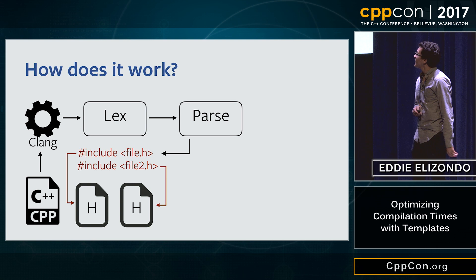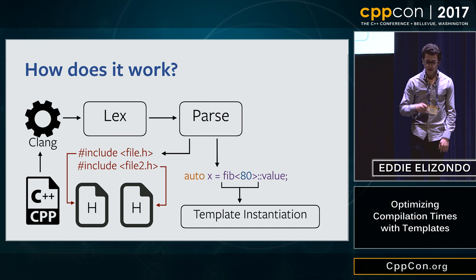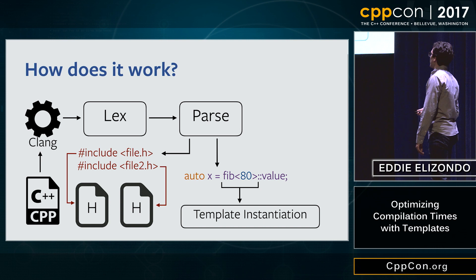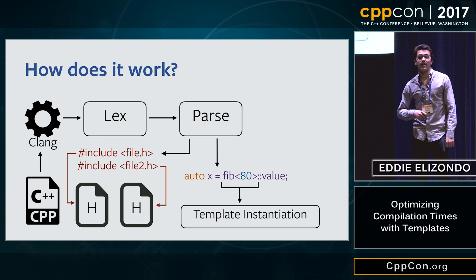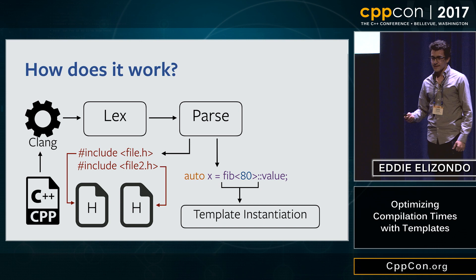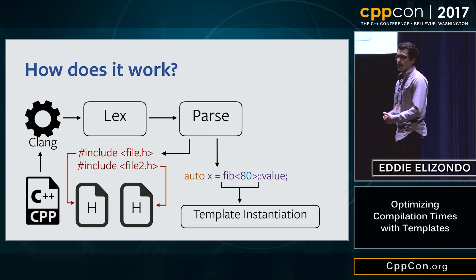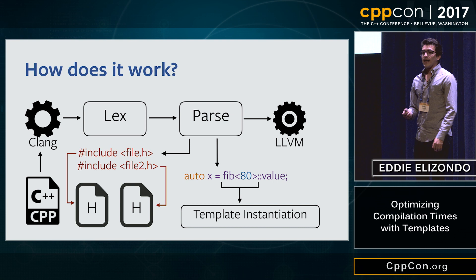After that, the parser starts actually parsing your source code. At some point, if you have templates, it finds something like Fibonacci<80> being assigned to a variable x. After finding that, the parser starts the template instantiation phase. It does that recursively — in this case for Fibonacci — and after it finishes instantiating all the templates and parsing everything, it passes that to the optimizer, to LLVM, to do the optimization steps and finish the compilation.